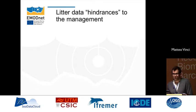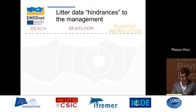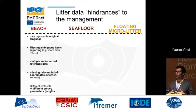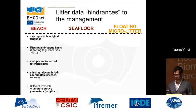During the acquisition and ingestion of this information we found hindrances in data management. For beach litter: data reported in original language, missing or ambiguous item reporting such as 'more than 100 items,' multiple or mixed reference lists used in the same survey, missing relevant information like beach coordinates, and different protocols with different survey parameters such as transect length.